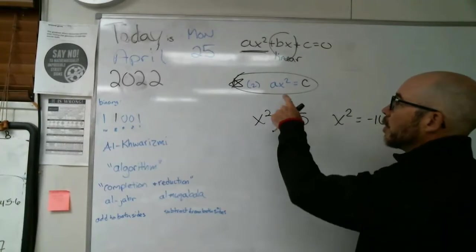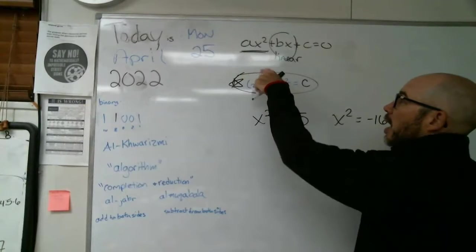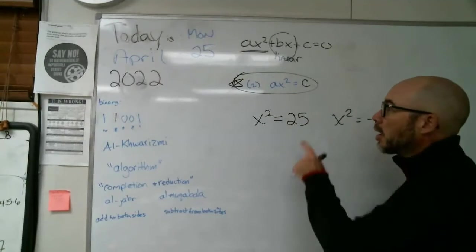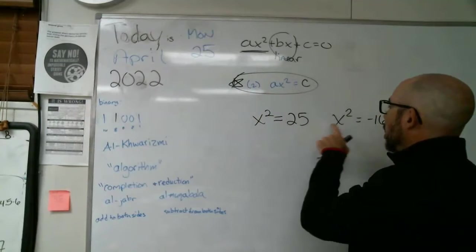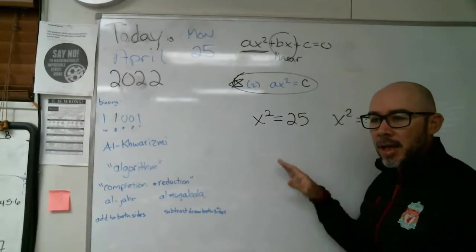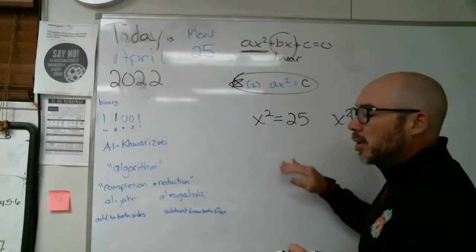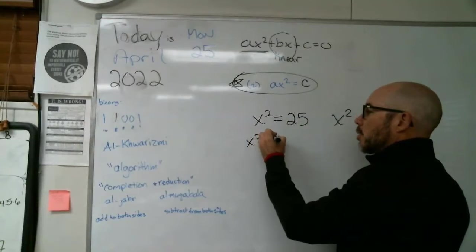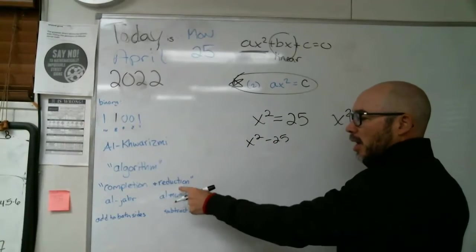So in today's version, we've got the first part, ax squared, and then we've got the constant. That constant could be on either side. In these two, the constant is over on the right side of the equal sign.